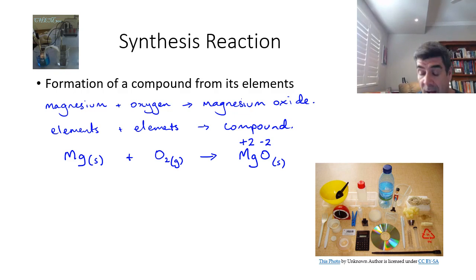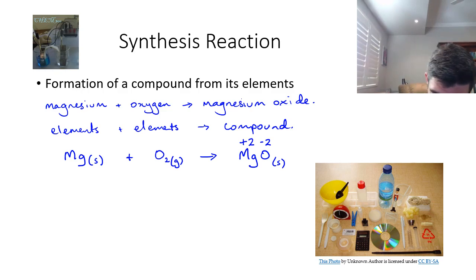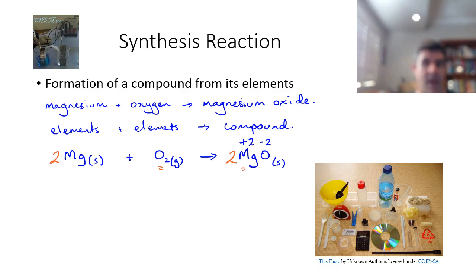Of course, this is not balanced, and I need to make sure that I do that. So let me just change the colour, so you can see I've got 2 oxygens here, so I'm going to have to put 2 at the front of here, and that now means I've got 2 magnesiums, so I'm going to put 2 at the front of here, and now I have a balanced equation.